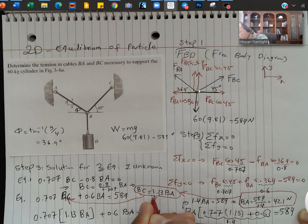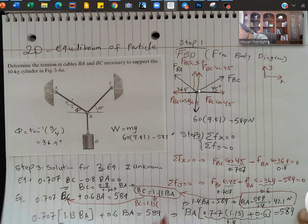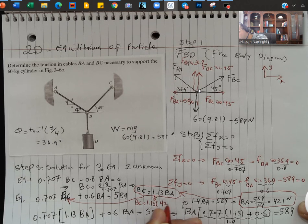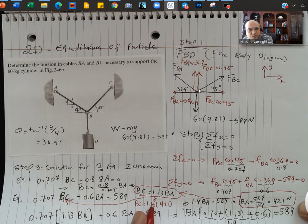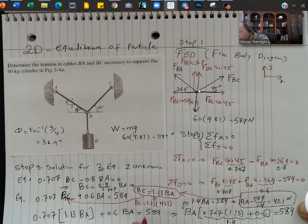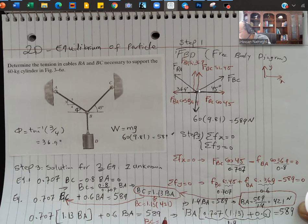Okay, so in this equation I have BC is equal to 1.13. The magnitude of BA is 421, so I put 421 here. And then, so it will be 1.13 times 421. I'm going to get BC is equal to 475.